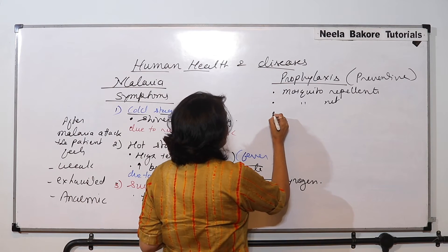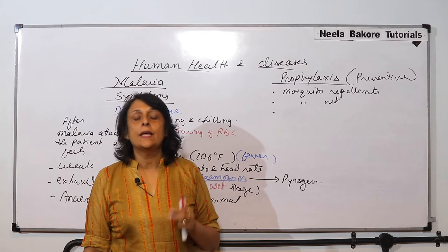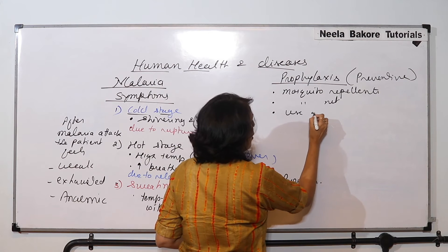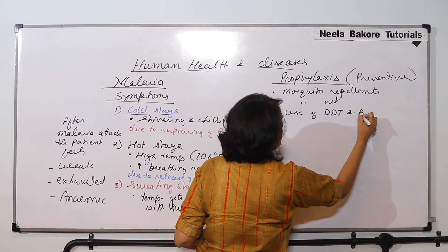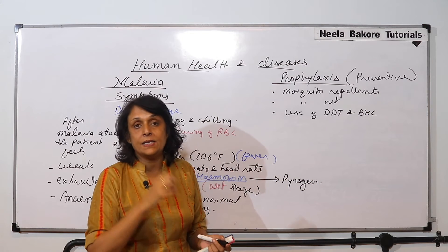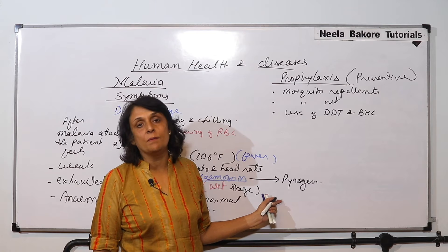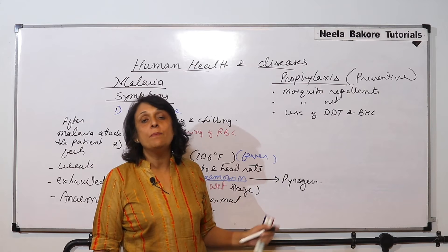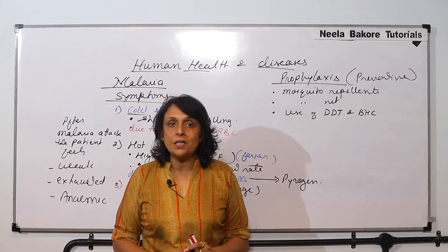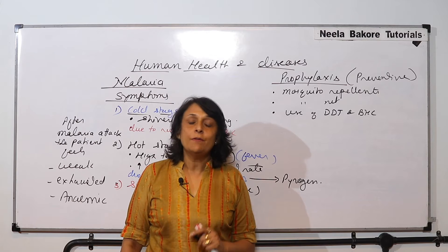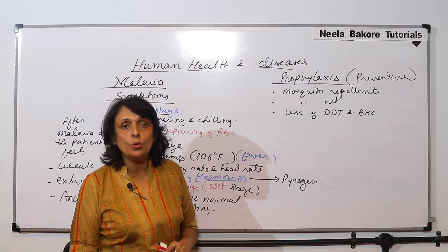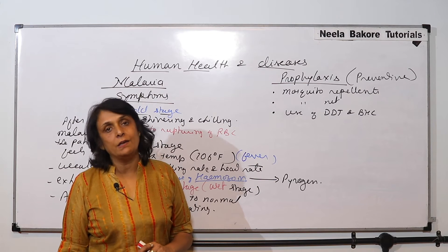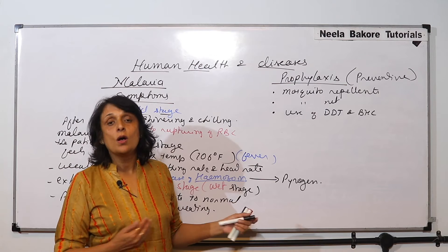Coming to a more technical part, there are certain chemicals which were very effective — the use of DDT and BHC. These are basically insecticides and they were very effective in killing mosquitoes. But these pesticides have been banned. When they were used, especially after World War II and for many years after, they were very effective in killing mosquitoes and controlling malaria.